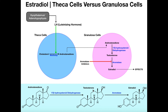In males, in Leydig cells, testosterone would pretty much be the end product. However, females have a large amount of another enzyme called aromatase. Aromatase is important in females because it allows testosterone to be converted to estradiol. A little bit of testosterone would be released into the blood, but the vast majority of it is going to be converted to estradiol via aromatase. This estradiol will have effects all over the body, as well as paracrine effects within and around the granulosa cells.